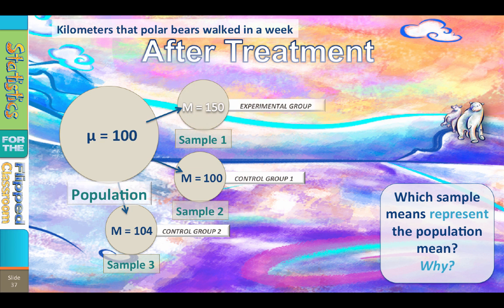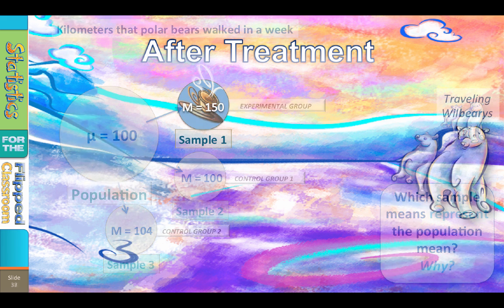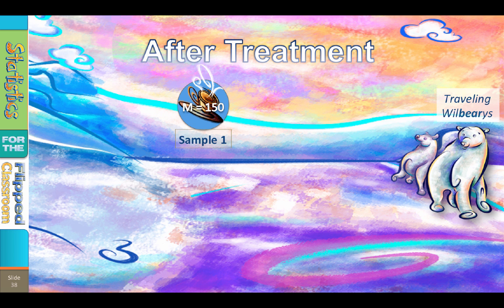Now the sample mean for the experimental group is 150. Does that sample mean represent the population mean? Now I'm beginning to have my doubts. I'm not so sure I can explain a 50-point difference just by random chance. I'm skeptical. So how do I explain this sample mean of 150 among the polar bears who consumed caffeine?